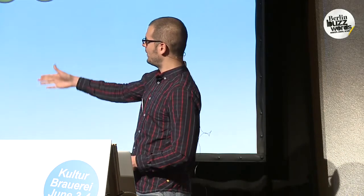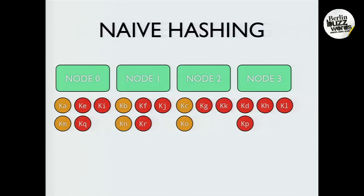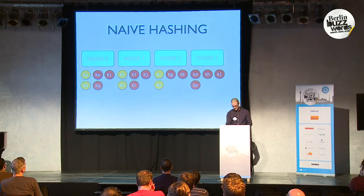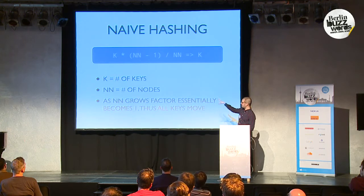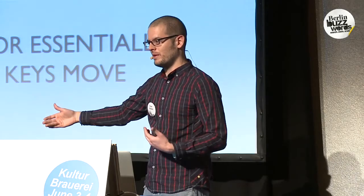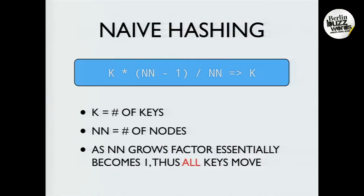The first way that most people might do this — although people are catching on that this doesn't work — is naive hashing. Naive hashing: you take the hash of a key and then you modulo that by your number of nodes. And that works, but there's a huge problem. If you add a node, you'll notice these red keys represent keys that have now changed their location. There's a lot of red keys — in fact, two-thirds of the keys have moved. In general, the number of keys moved with naive hashing is K times (N_new minus 1) over N_new, and eventually that fraction grows towards 1 — if you had 9 nodes, 9 out of 10 is 90%, so you end up moving almost all your keys, which isn't ideal.